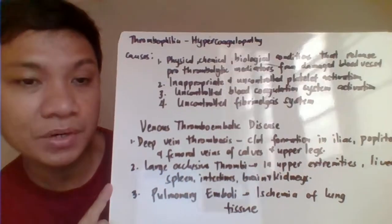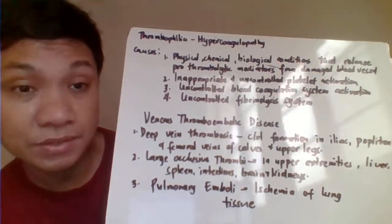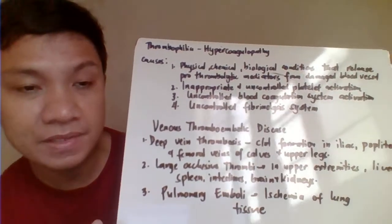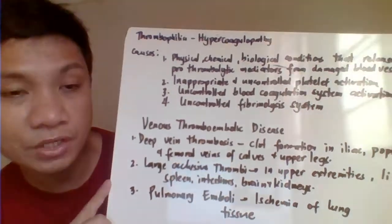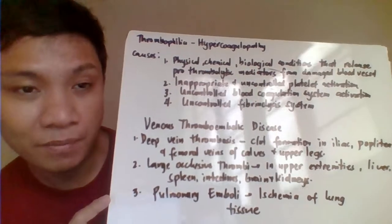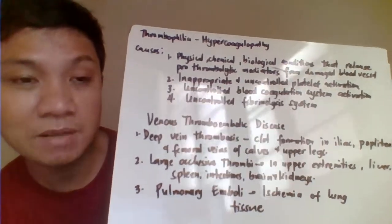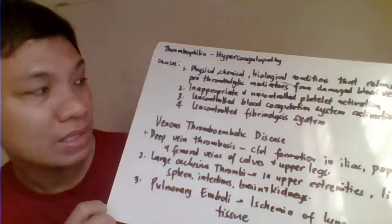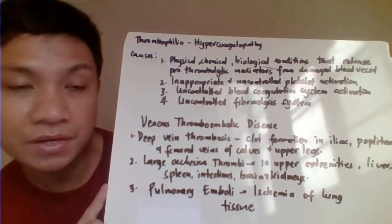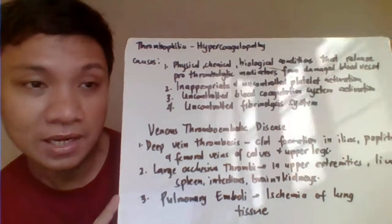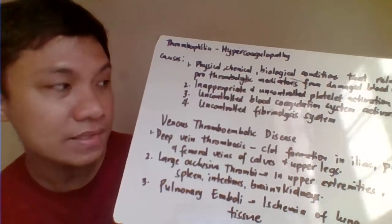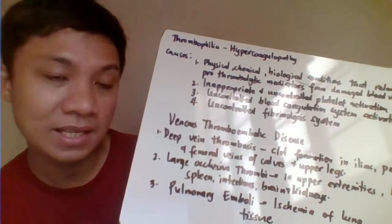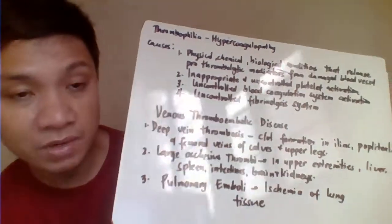Several factors can result in thrombosis. It can be caused by physical, chemical, or biological conditions that release different prothrombotic mediators responsible for the clotting process. Another cause is inappropriate activation of coagulation factors, inappropriate activation of platelets, blood vessels, and the fibrinolysis system — when you cannot digest the clot, that's a problem with your fibrinolysis.